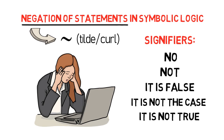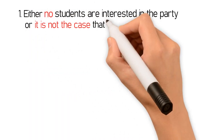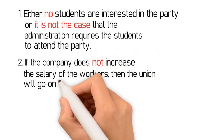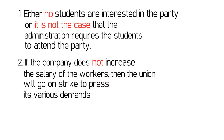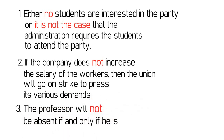For example, let's consider the following statements. Number 1: Either no students are interested in the party, or it is not the case that the administration requires the students to attend the party. Number 2: If the company does not increase the salary of the workers, then the union will go on strike to press its various demands. And number 3: The professor will not be absent if and only if he is not sick. As we can notice, example number 1 is a compound statement, and both component statements contain the negation signs NO and IT IS NOT THE CASE. For this reason, when we symbolize the entire statement, both component statements should be negated.